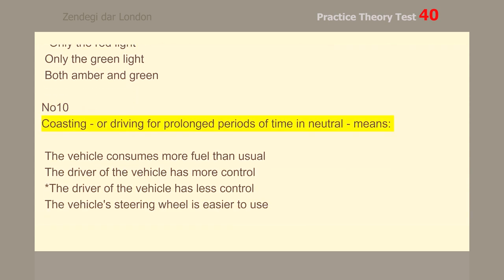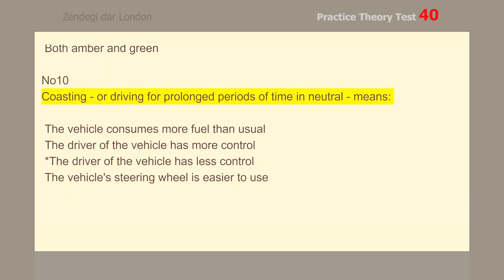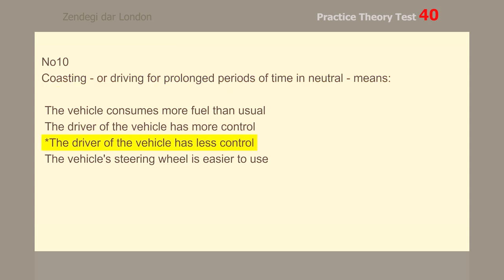Number 10. Coasting, or driving for prolonged periods of time in neutral, means the driver of the vehicle has less control.